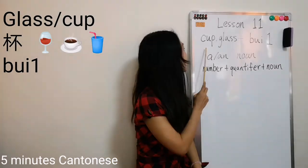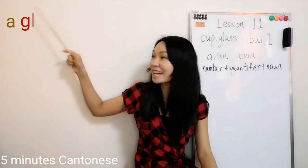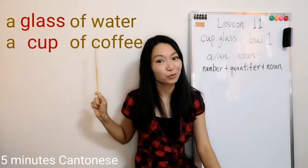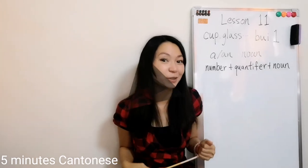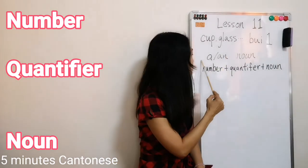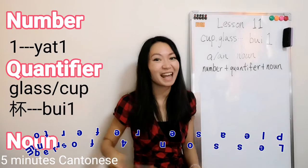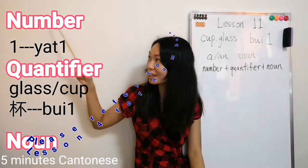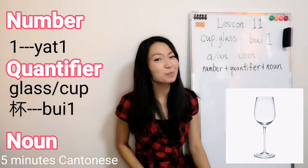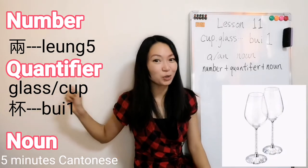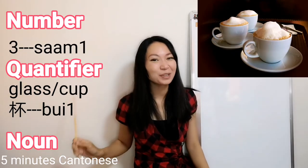Don't worry, we'll start with an easy one. A cup or glass — we just learned 杯. For example: a glass of water, a cup of coffee. Same as English, glass and cup can serve as a quantifier. In Cantonese, we don't have an article, so we use a number to indicate one. One glass — 一杯. Two glasses — 兩杯. Three cups — 三杯. Very good.